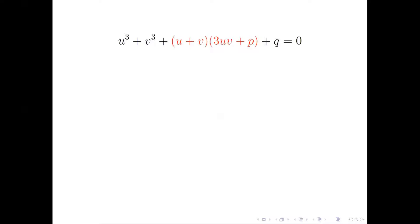Look at the right part. If we assume 3uv plus p equals zero, then the equation can be simplified as u cubed plus v cubed plus q equals zero.